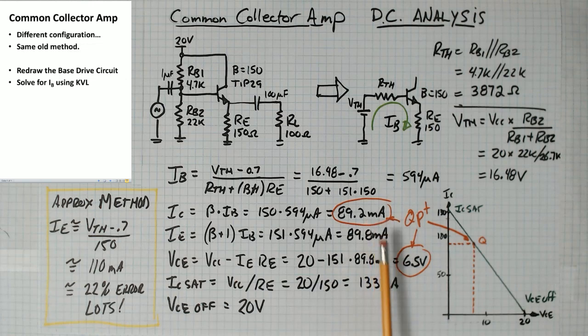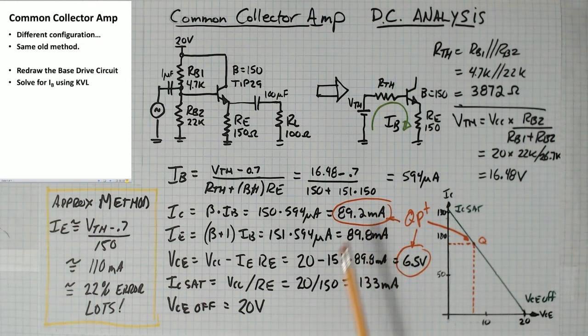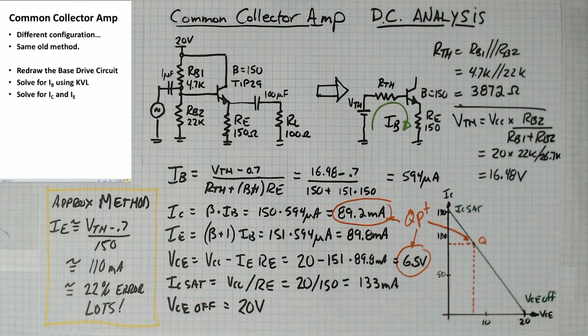So now we've got our Q point. We've got our combination of voltage and current on the load line. Now we need to figure out the ends of the load line. So we solve for IC and IE. We solve for VRC and VCE.